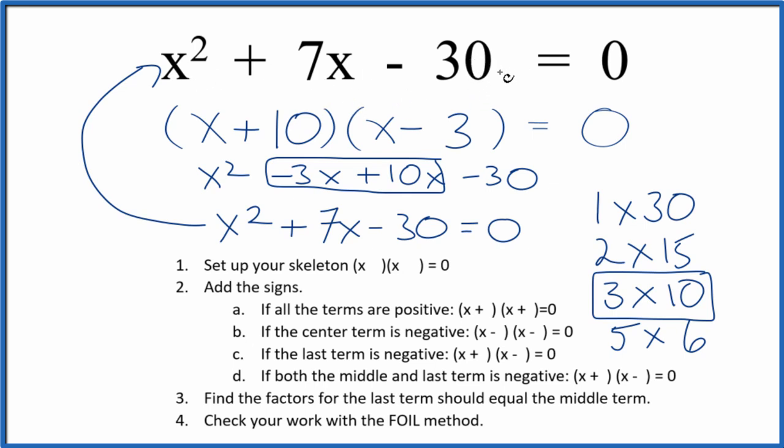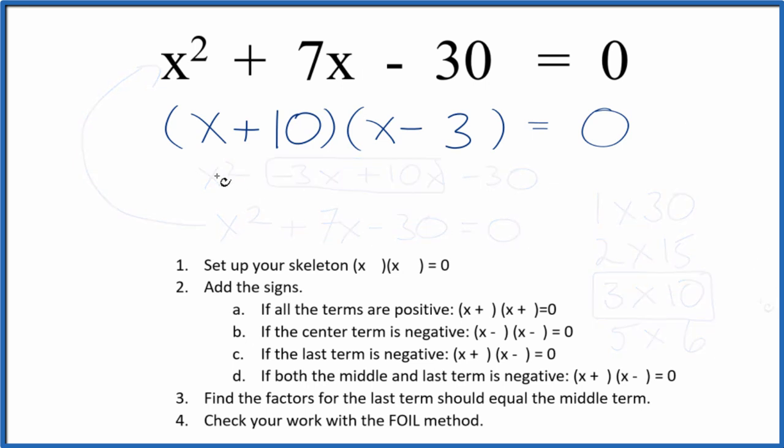Let's briefly find the values for x that'll make this equation equal 0. We say x + 10 = 0, so x = -10, and x - 3 = 0, so x = 3.